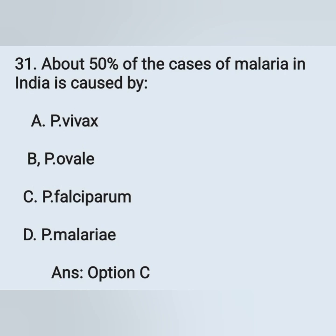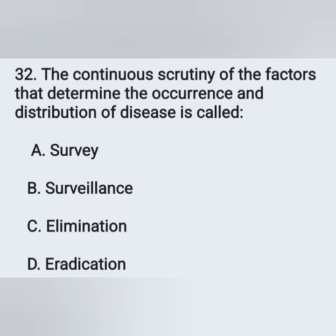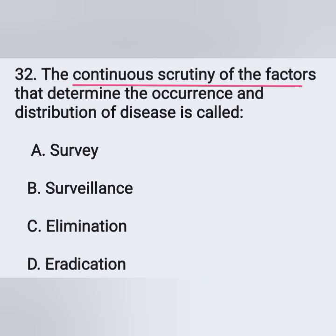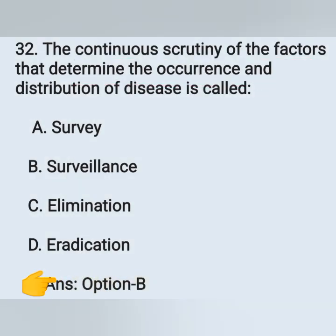Question 32: The continuous scrutiny of the factors that determine the occurrence and distribution of disease is called — options: option A, survey; option B, surveillance; option C, elimination; option D, eradication. The correct answer is surveillance, option B.